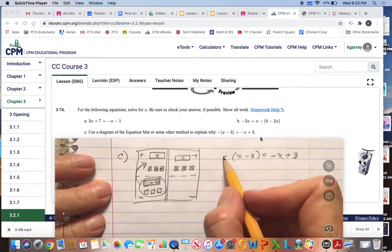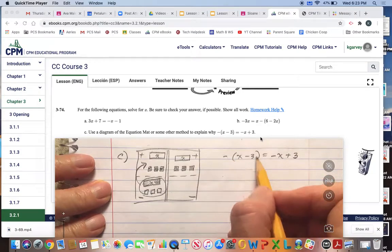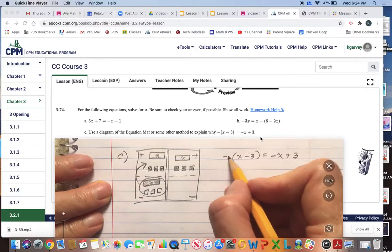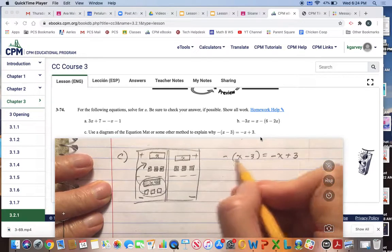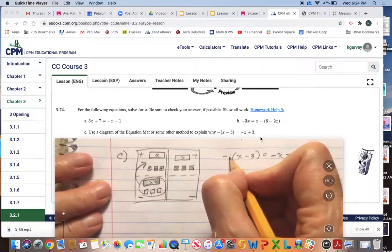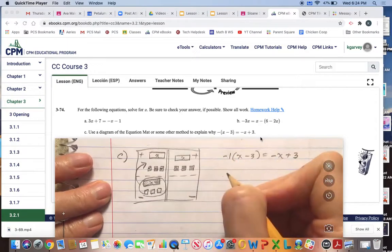When you've got a negative sign in front of parentheses like this, you're really using the distributive property to flip. There is an invisible one in front of here.